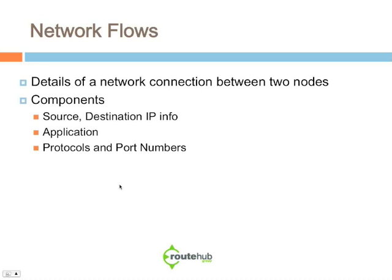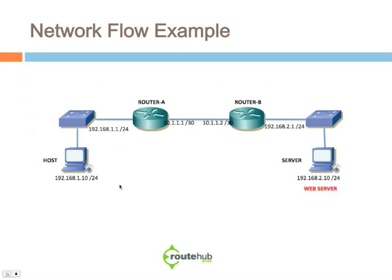Network flows pretty much provide a detail of a network connection between two particular nodes. Some of the major components of a network flow are things such as the source and destination IP address, the application that is being used, including protocols and port numbers. Let's talk about this further using graphical examples, since a picture speaks a thousand words. This is the same kind of graphic we use for our other video on IP routing.